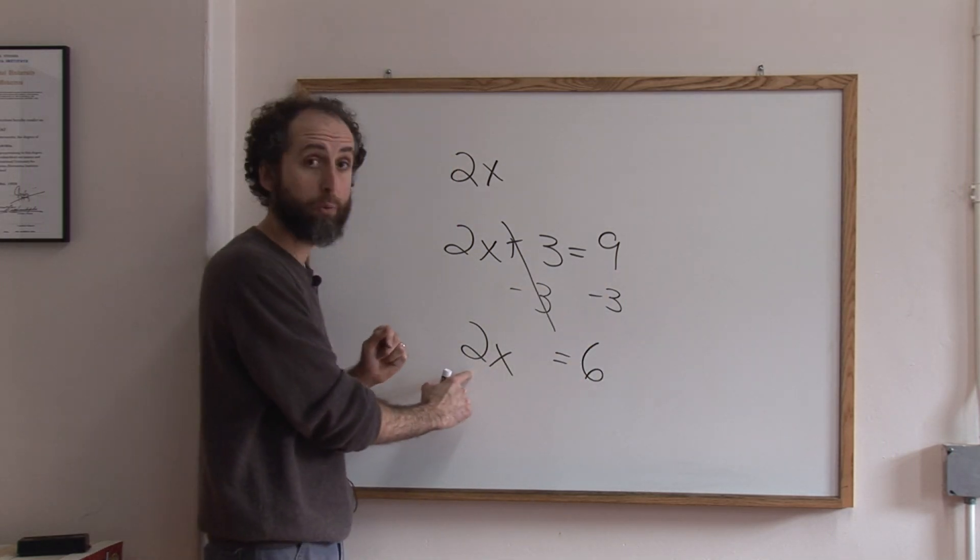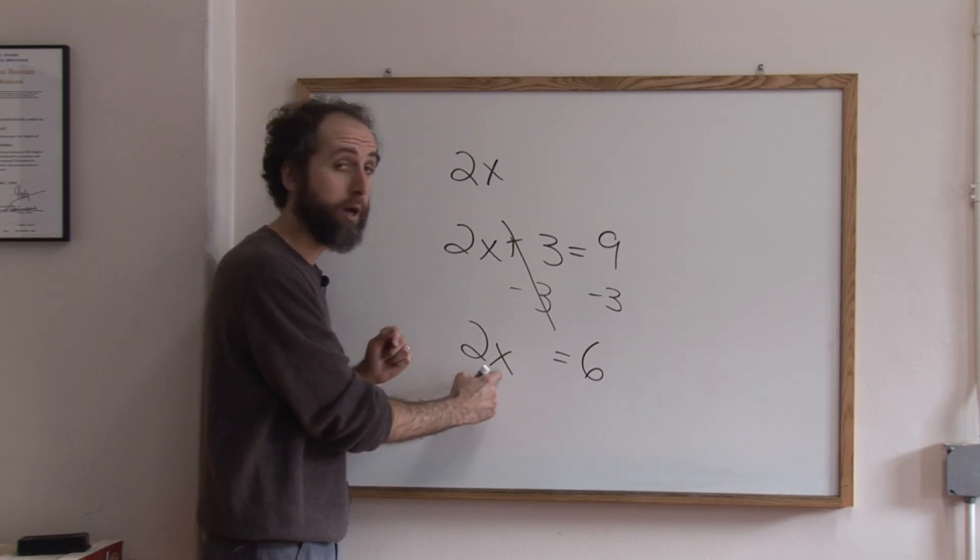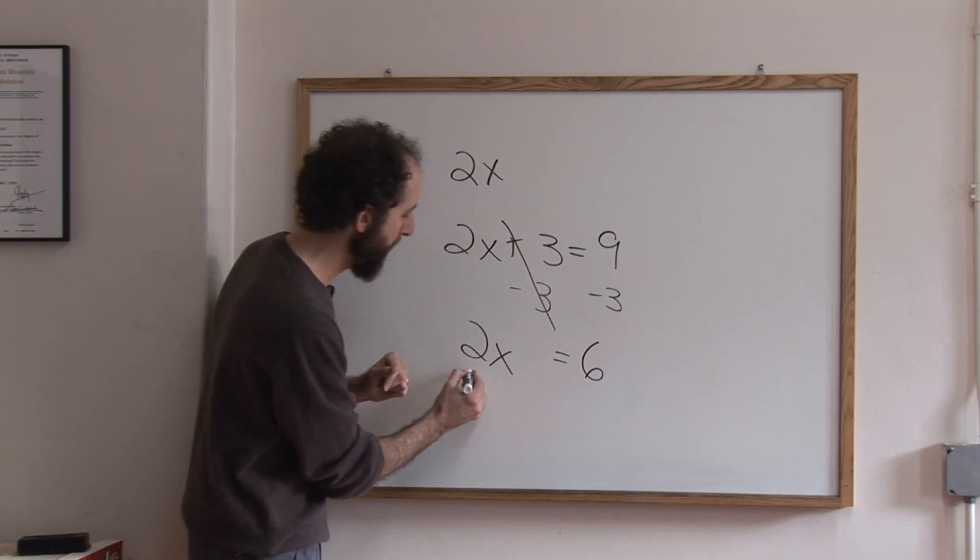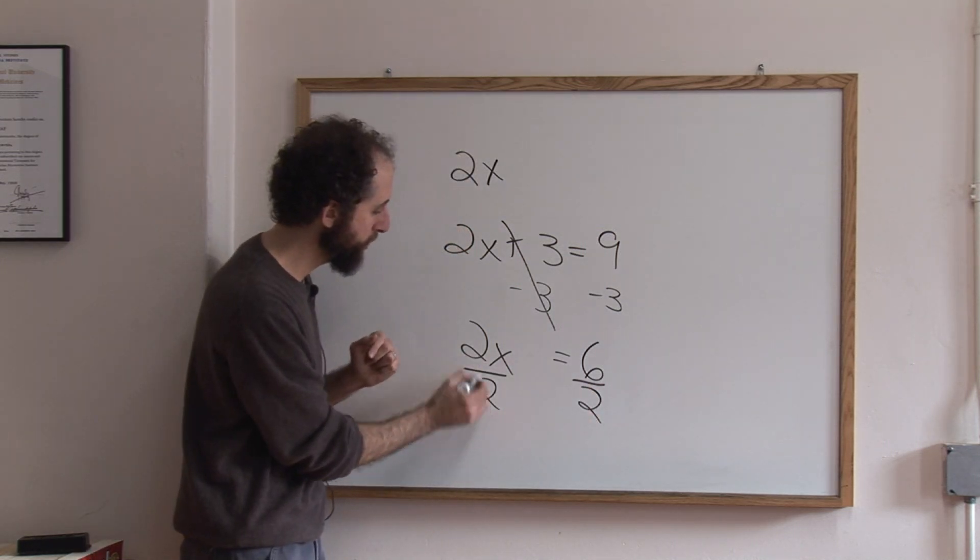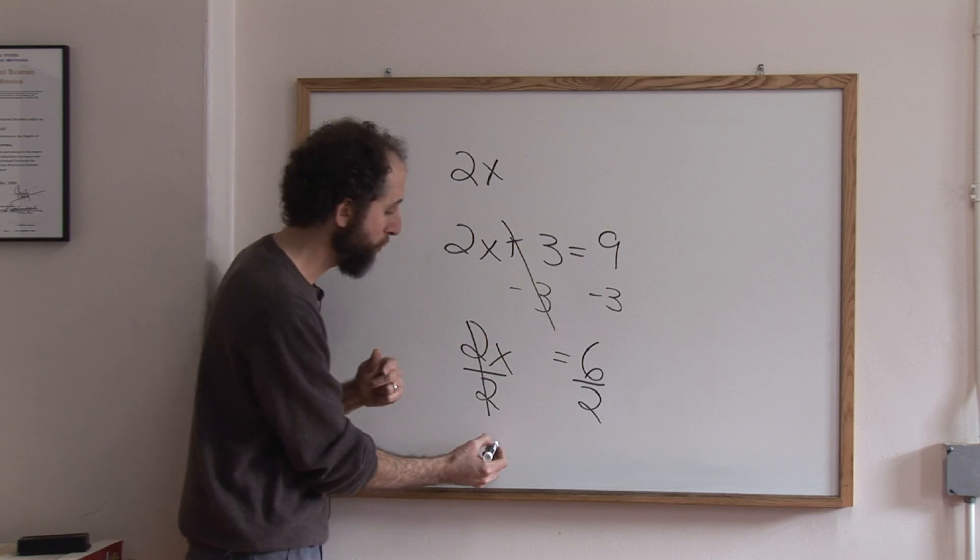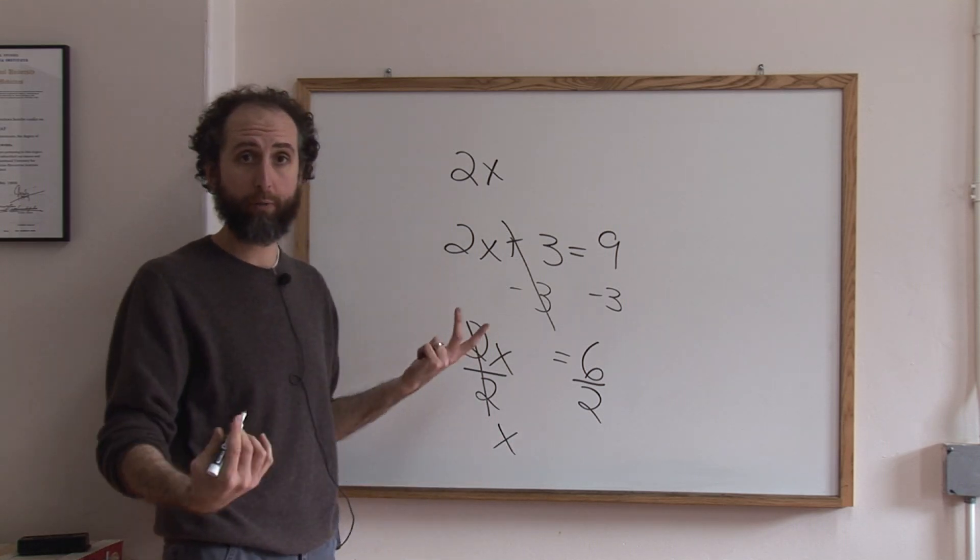Now we have two times x and we want to eliminate that. The opposite of times is divide, so we're going to divide both sides by two. Why do we do that? Because two over two cancels - two over two is one. So we have one x, or just x now. That's why we did it.